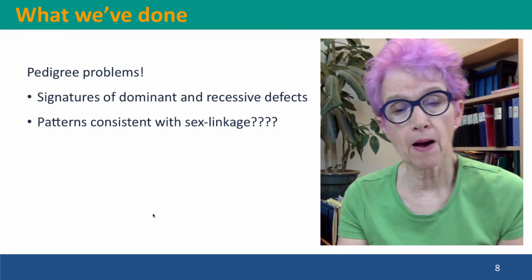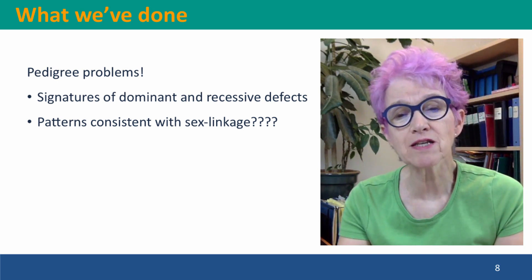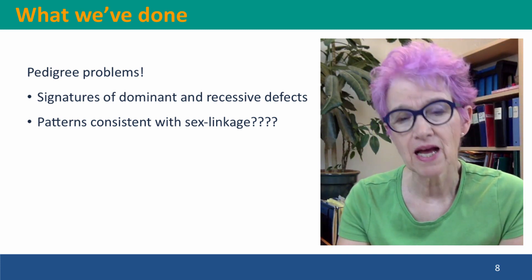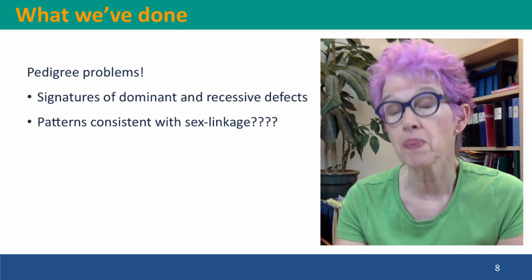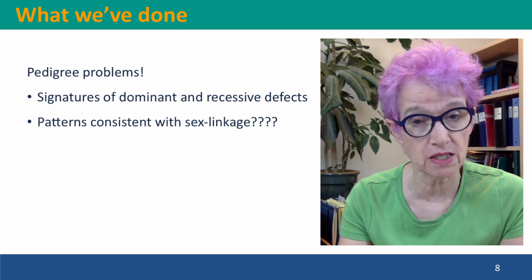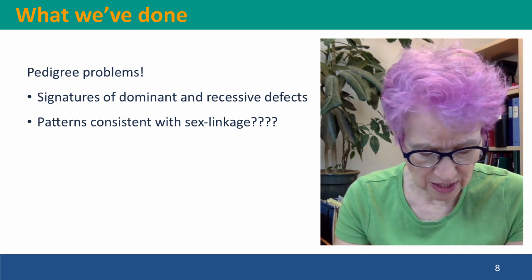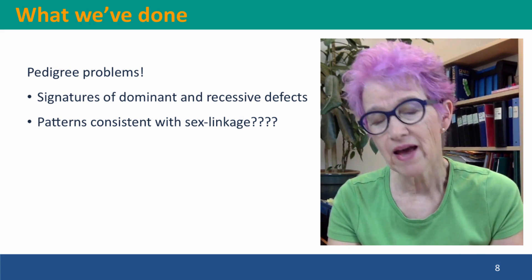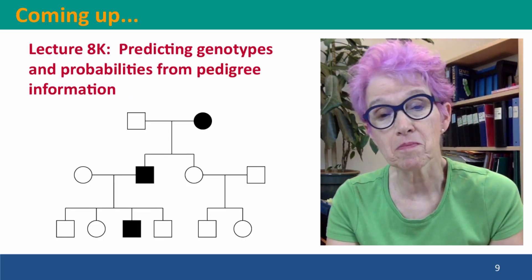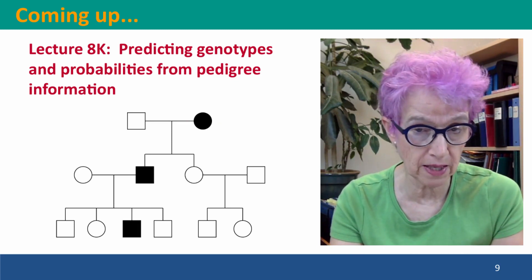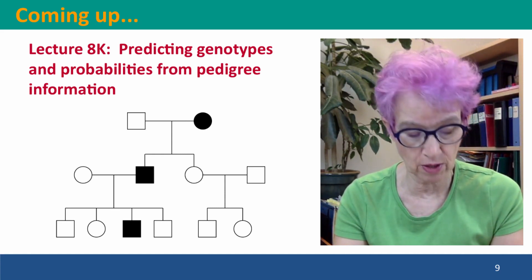So we've introduced how to draw a pedigree, diagrammed a genetics problem using a pedigree, and considered signatures of dominant and recessive defects: if both parents are unaffected but the child is affected, the defect must be caused by a recessive allele; if both parents have the defect but the child doesn't, it must be caused by a dominant allele. Other situations are ambiguous. We've also considered whether patterns could be consistent with sex linkage, and found that many patterns are consistent with sex linkage but not diagnostic of it. Coming up next, we're going to work through some more complicated situations using pedigrees, predicting genotypes and probabilities of particular genetic outcomes. I hope to see you there.